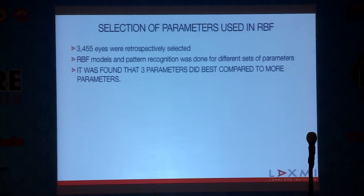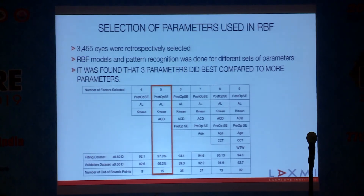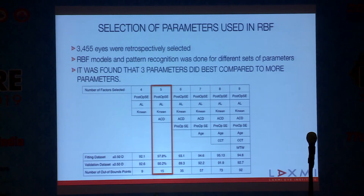In the original RBF 1.0 formula, 3,455 eyes were retrospectively selected. RBF model and pattern recognition was performed for different sets of parameters. It was found that only three parameters — axial length, mean K, and anterior chamber depth — gave the best predictability for IOL calculation to achieve minimum post-op refraction.